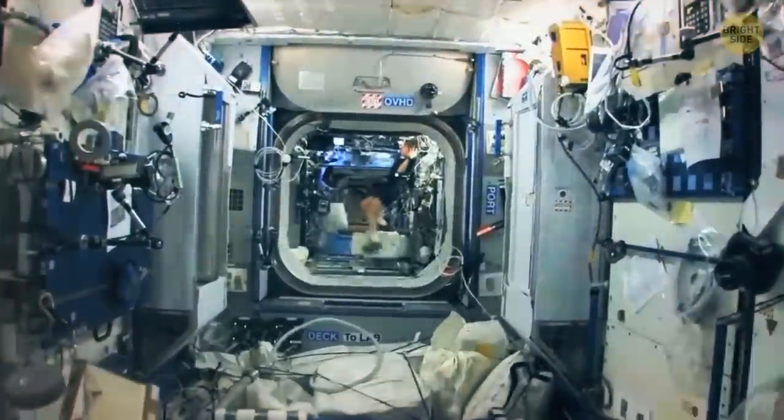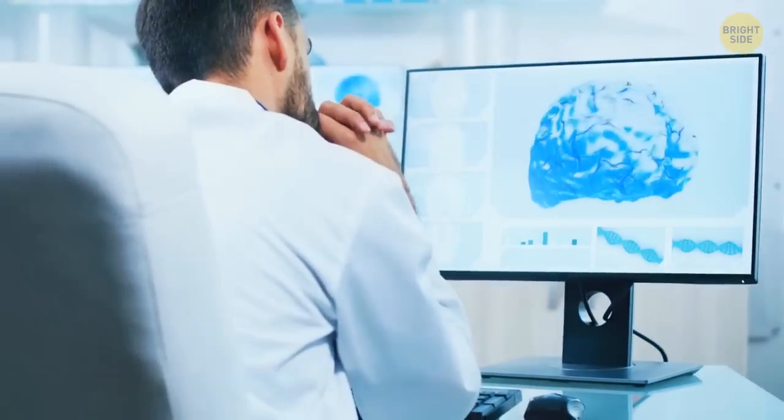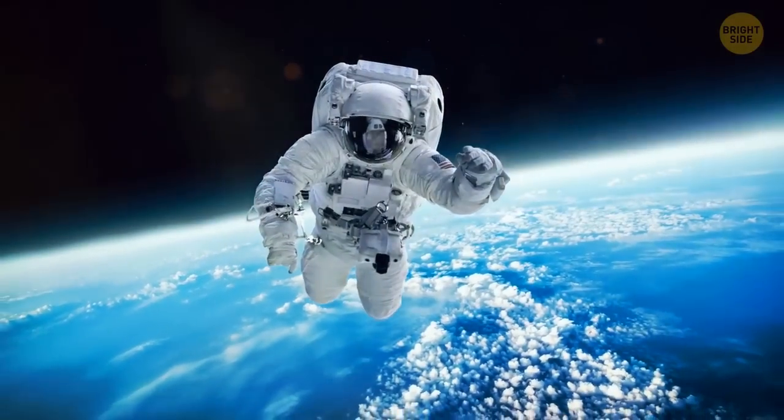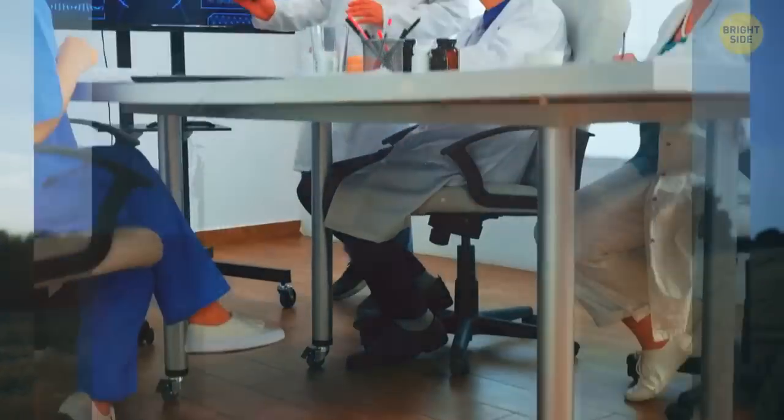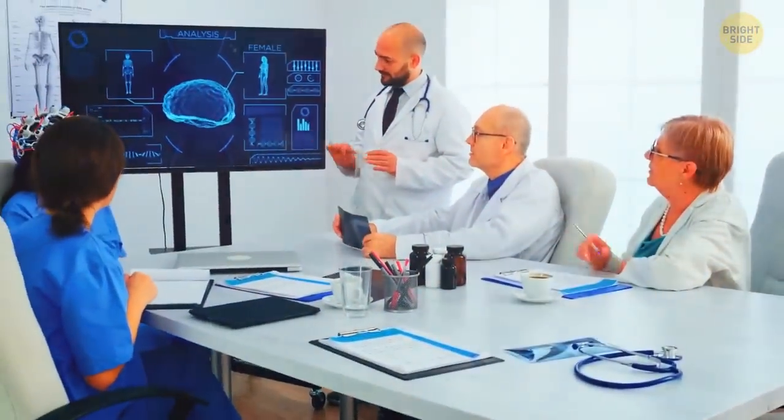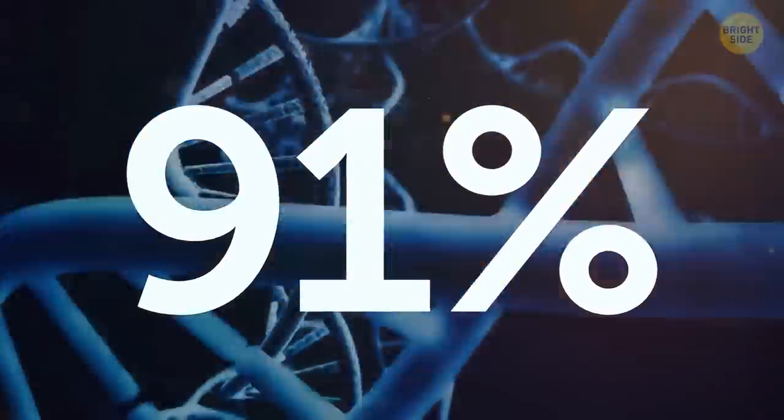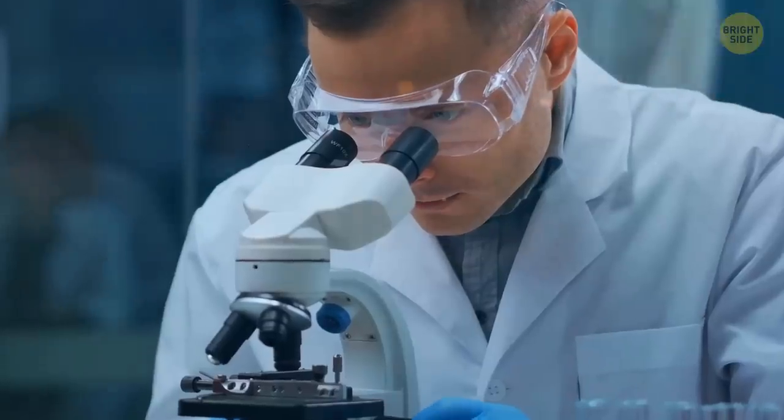Space living can change genes and send the immune system into overdrive. It can dull mind and memory. Most changes that the astronaut experienced in space reversed once he returned to Earth, but not everything. The researchers tested him again after six months back on land. Roughly 91% of the genes that had changed activity in space were now back to normal. The rest stayed in space mode.